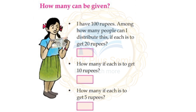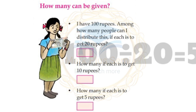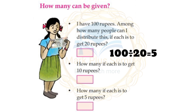I have 100 rupees. Among how many people can I distribute this if each is to get 20 rupees? 100 divided by 20 is equal to 5. So 5 people can each get 20 rupees.